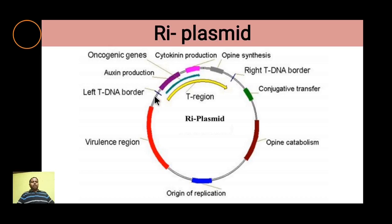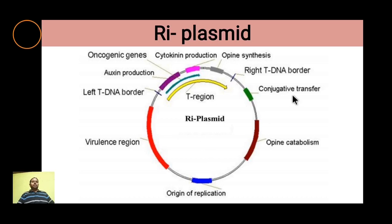The Ri plasmid has a similar structure. It also has left and right T-DNA borders marking the ends of the transferred T-DNA, genes for cytokinin production, an oncogene, an auxin gene, an opine synthesis gene, a virulence gene, and an origin of replication. The T-DNA is essentially similar in both the Ti and Ri plasmids.